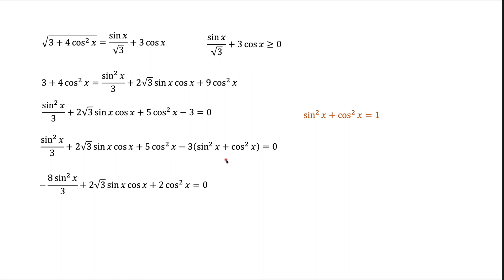The resulting equation only has sines and cosines. The next thing we'd like to do is divide this equation by cosine squared. But before we do this, we want to make sure that cosine is not 0. Looking at the equation, cosine x = 0 is not a solution, because if cosine equals 0, the last two terms go to 0, and by the Pythagorean identity sine squared becomes 1, leaving minus 8/3 = 0, which doesn't happen. So we're confident that cosine x is not 0 and we can divide by cosine squared.